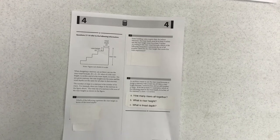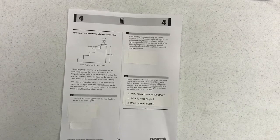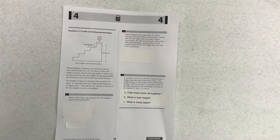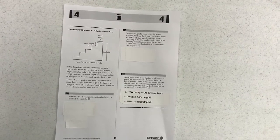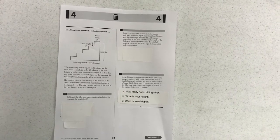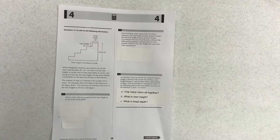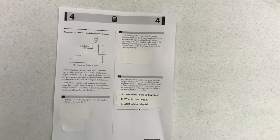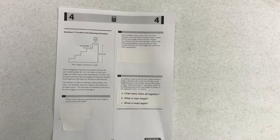Question 18: some building codes require that for indoor stairways a tread depth must be at least nine inches and the riser height must be at least five inches. According to the riser tread formula, which of the following inequalities represents a set of all possible values for the riser height that meets this code requirement? Since I've covered over the answers, you will have to give the range of riser height. So it'll be H is greater than or H is less than or equal to.